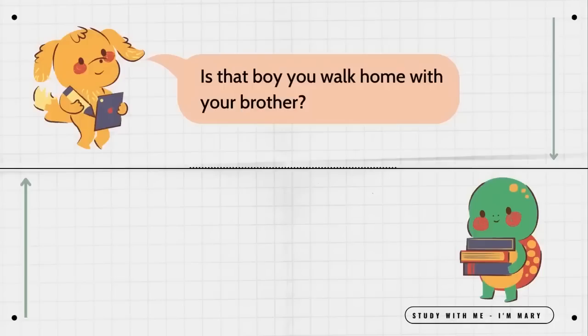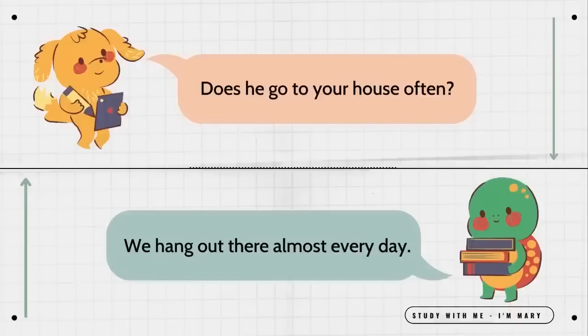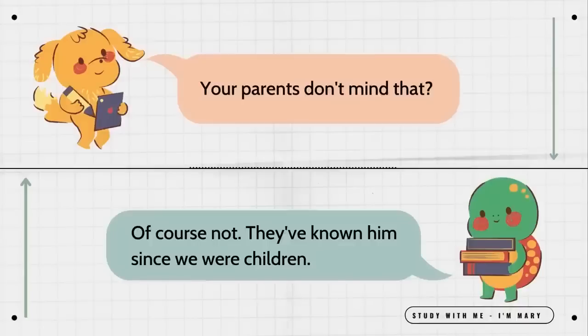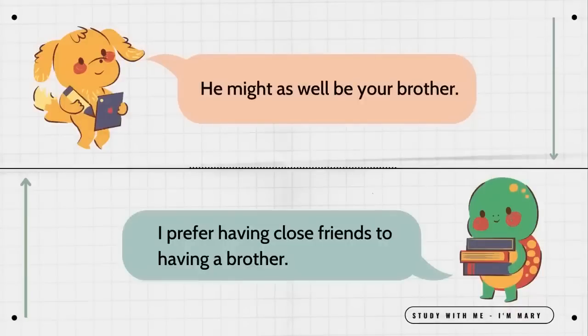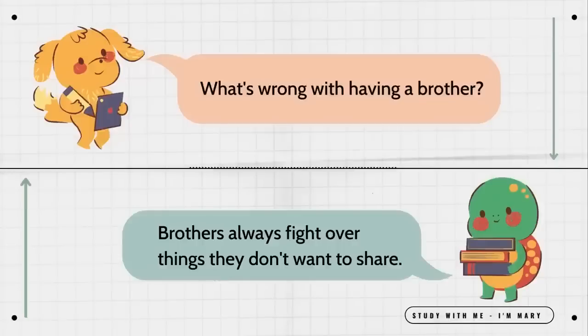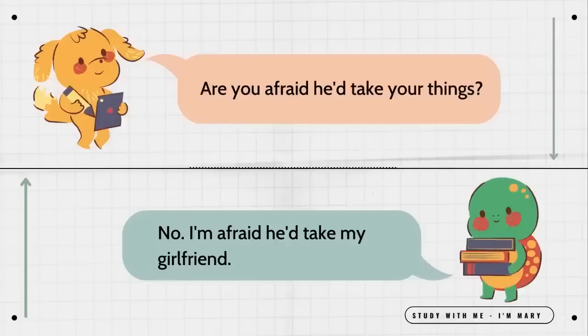Is that boy you walk home with your brother? No, he's my neighbor. Does he go to your house often? We hang out there almost every day. Your parents don't mind that? Of course not. They've known him since we were children. He might as well be your brother. I prefer having close friends to having a brother. What's wrong with having a brother? Brothers always fight over things they don't want to share. Are you afraid he'd take your things? No, I'm afraid he'd take my girlfriend.